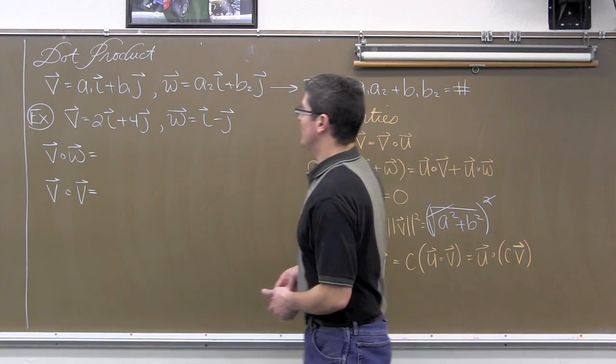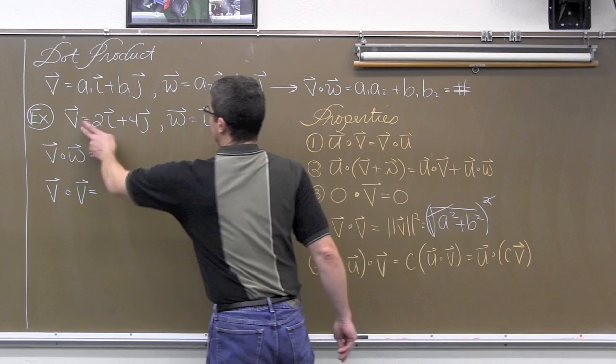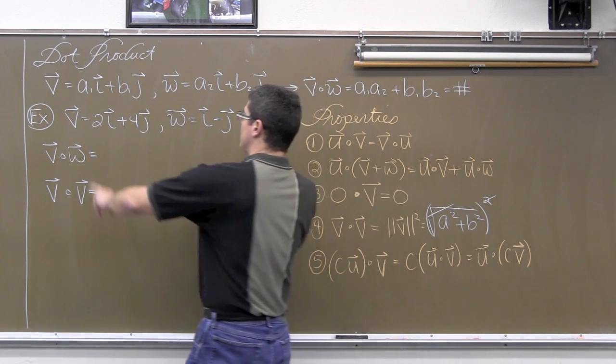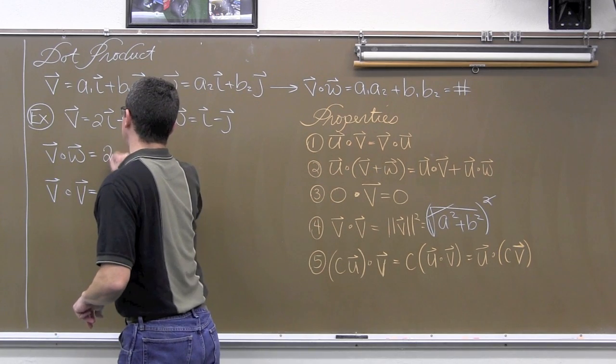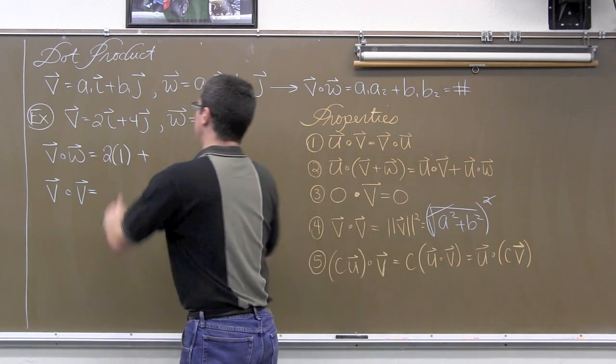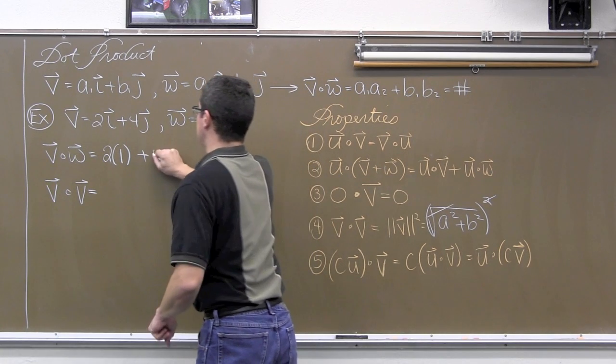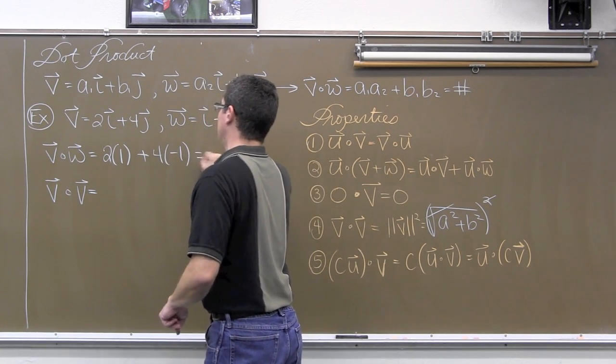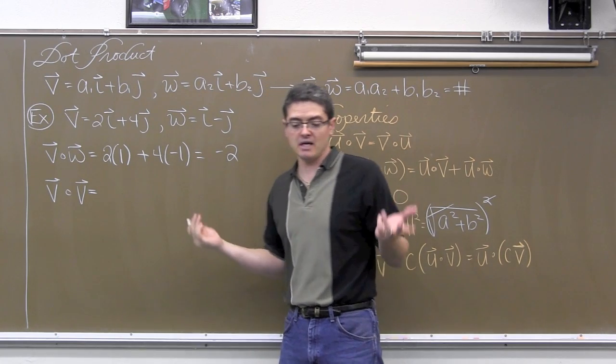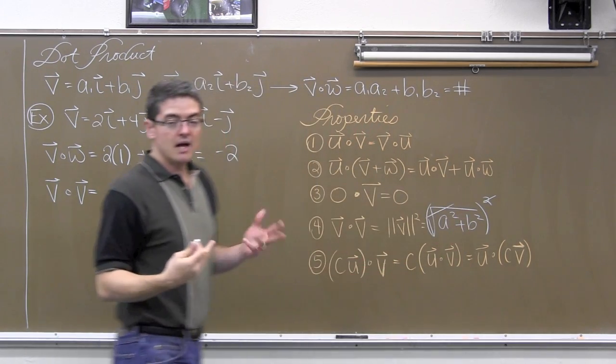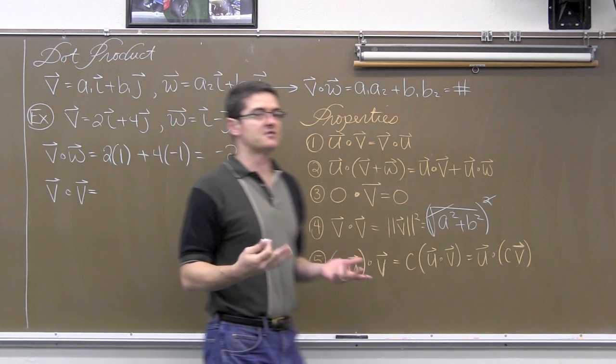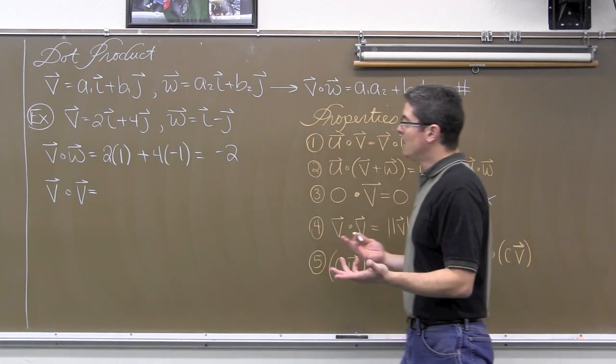Let's go through an example. So we have vector v and vector w, and we want to find the dot product. So we are going to take the two values of a, multiplying together, so two times this a value of one, and add that with the b values, say it is four times negative one, and two minus four is negative two. And that is it. As it stands alone that just ends up being a scalar multiple of negative two and we are done.